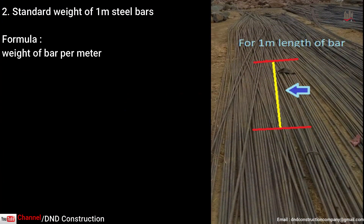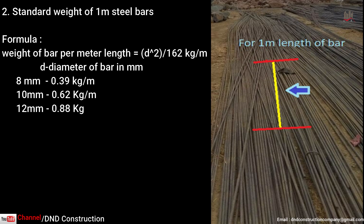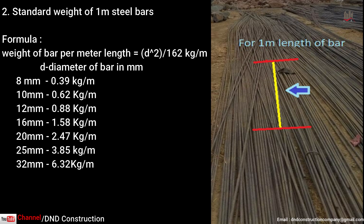The second point is the weight of steel bar. The weight of a steel bar is calculated by the simple formula D squared divided by 162, where D is the diameter of the bar in mm, giving the weight per meter. For 8 mm bar: 0.39 kg; for 10 mm: 0.62 kg; for 12 mm: 0.89 kg. These values should be remembered.